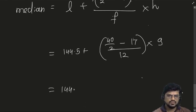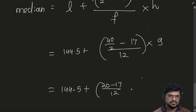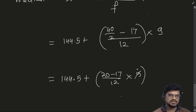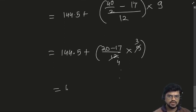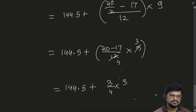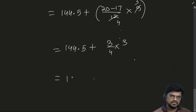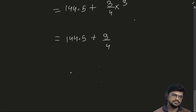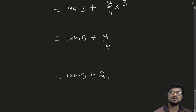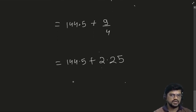So this will be: 144.5 + (20 − 17) / 12 × 9 = 144.5 + 3/12 × 9 = 144.5 + 3/4 × 3 = 144.5 + 9/4. Now 9/4 = 2.25. So if you add both: the median is 146.75.